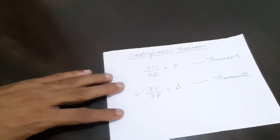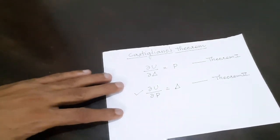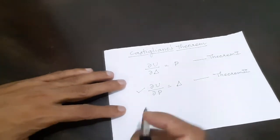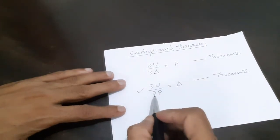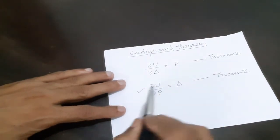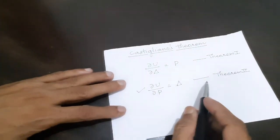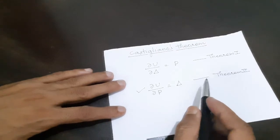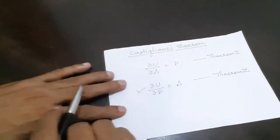For indeterminate structures, if we are going to determine the reactions, we are going to use this method. Castigliano's second theorem — partial derivative of strain energy with respect to force is equal to deflection — is the theorem that we are going to use to determine unknown reactions.